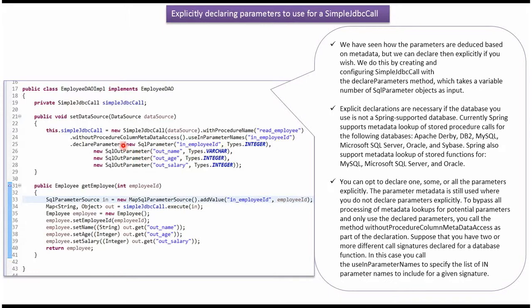Here, using the declareParameters method, I am declaring the input parameters and the output parameters of the stored procedure. Here you can see the getEmployee method, which accepts an employee id. That employee id value I am setting to the stored procedure input parameter.